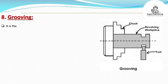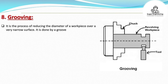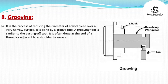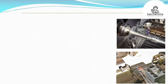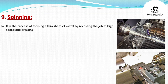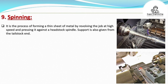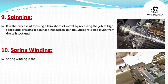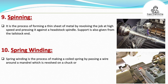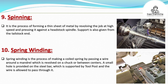Grooving is the process of reducing the diameter of a workpiece over a very narrow surface using a groove tool, similar to the parting off tool, often done at the end of a thread or adjacent to a shoulder. Spinning is the process of forming a thin sheet of metal by revolving the job at high speed and pressing it against a headstock spindle, with support from the tailstock end. Spring winding is the process of making a coiled spring by passing a wire around a mandrel revolved on a chuck or between centers; a small hole in a steel bar supported by the tool post guides the wire.